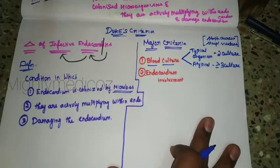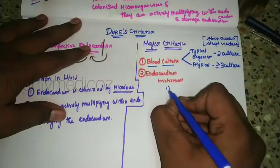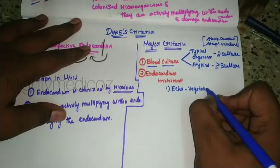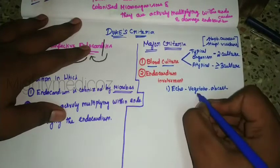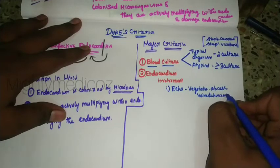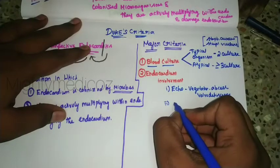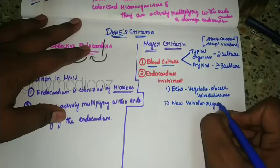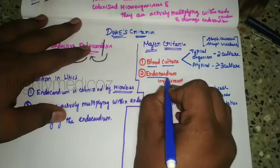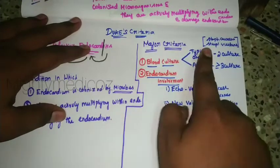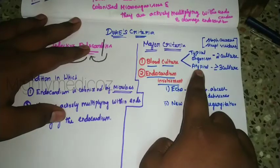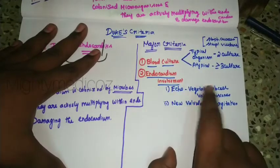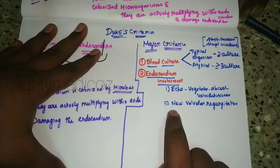The second major criterion is endocardium involvement. On echocardiography, you can see vegetation, or abscess, or valve dehiscence. If the echo shows vegetation, abscess, or valve dehiscence — or new valvular regurgitation — that satisfies this criterion. So to summarize: blood culture with typical organisms with three or more positive cultures, and endocardial involvement showing vegetation, abscess, valve dehiscence, or new valvular regurgitation — these are the two major criteria.